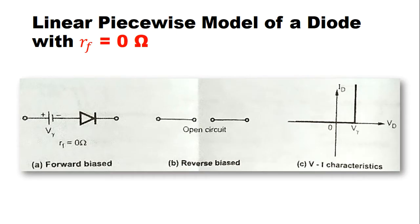Another way to analyze diode circuits is to approximate the VI characteristics of a diode using only straight lines — that is, a linear relationship. Since this method models the diode with pieces of straight lines, the name given to such an approximation is the piecewise linear method. By using this piecewise linear method, we can analyze the diode functionality.